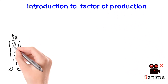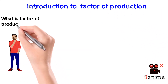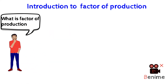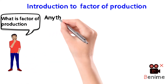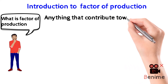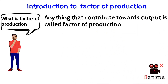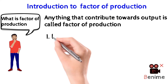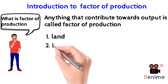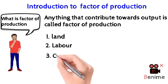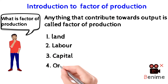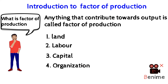You might be wondering what is a factor of production. In simple words, anything that contributes towards output is called a factor of production. This means all those things that help in the production of any goods or services. Mainly, there are four major factors of production: number one, land; number two, labor; number three, capital; and number four, organization or entrepreneurship.